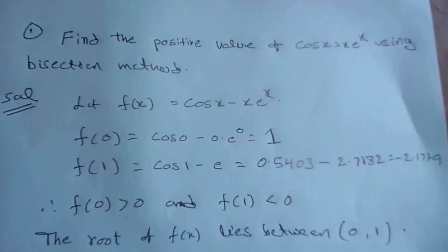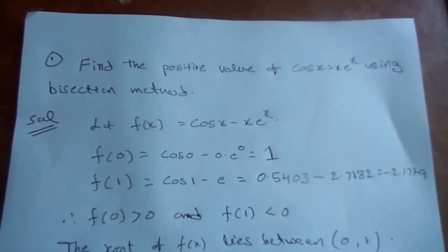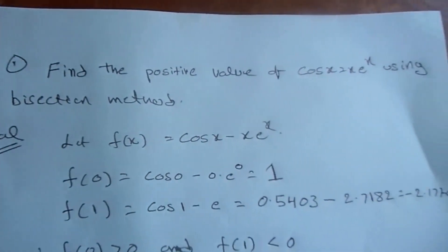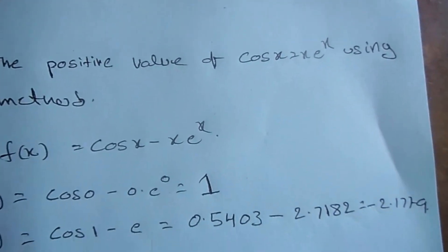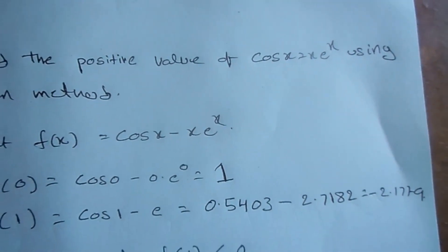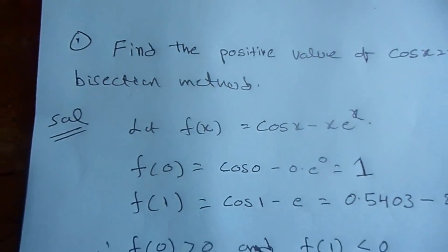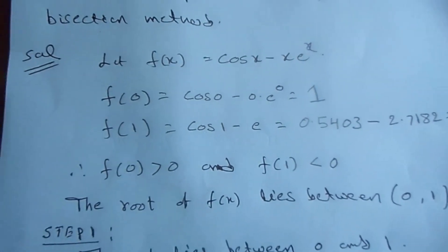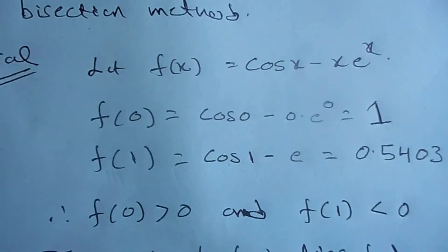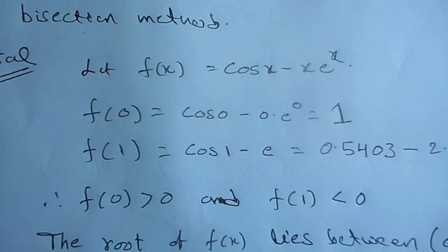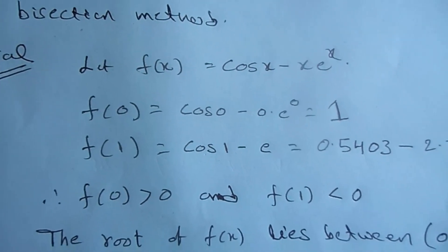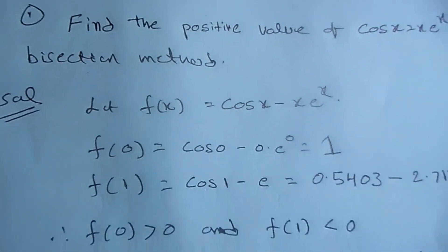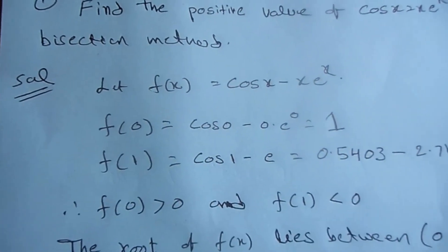This is the first problem on the bisection method. Find the positive value of cos(x) equal to x·eˣ using the bisection method. Let f(x) equal to cos(x) minus x·eˣ. For the initial solution, the positive value means greater than 0.